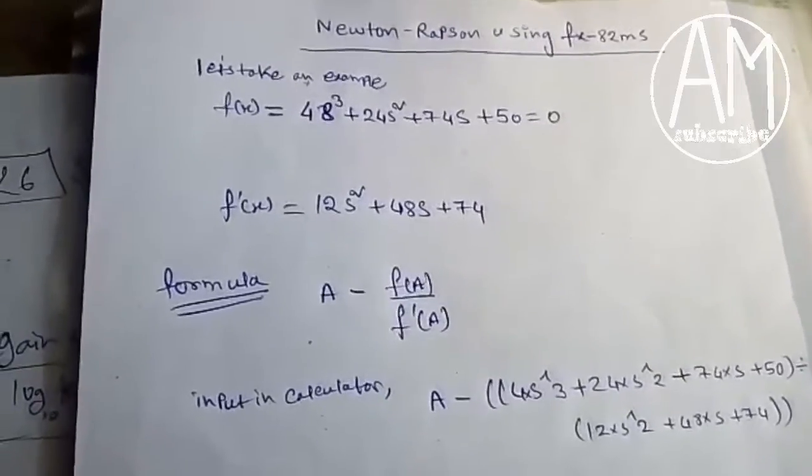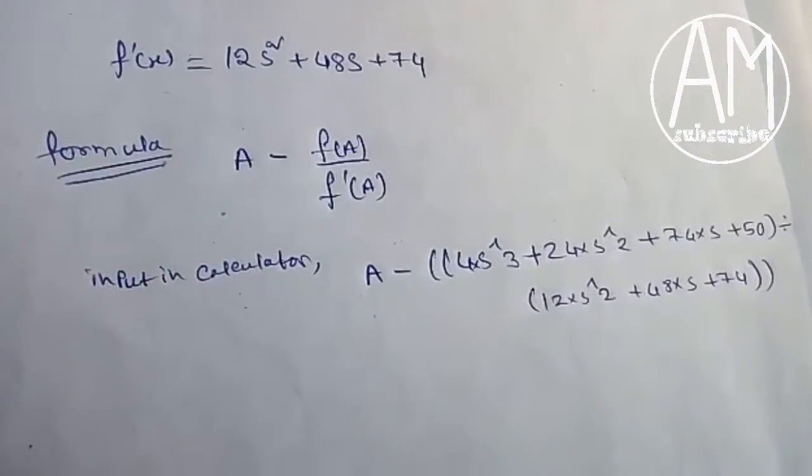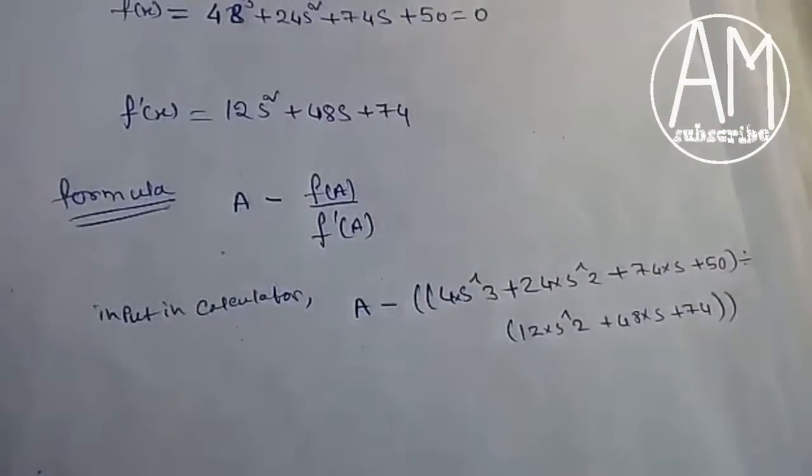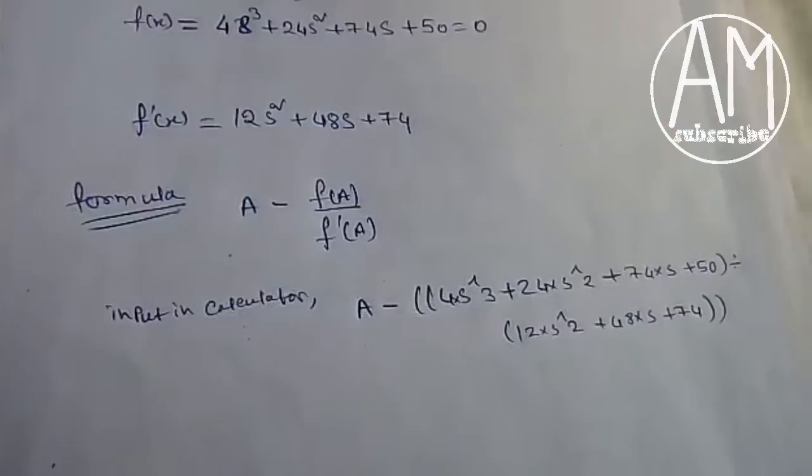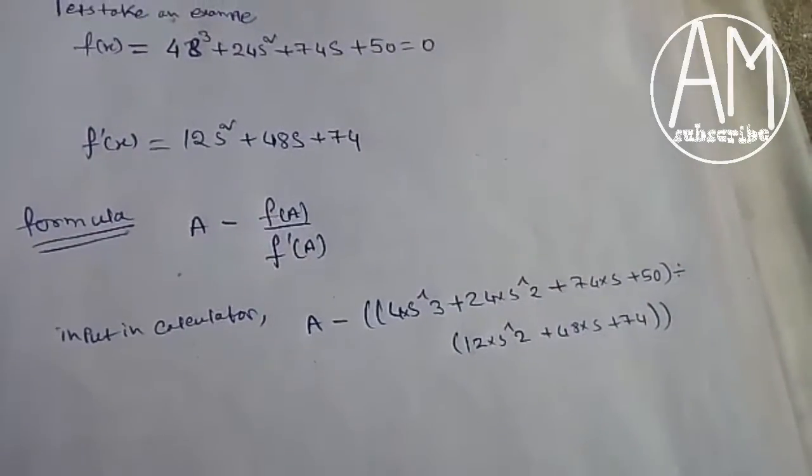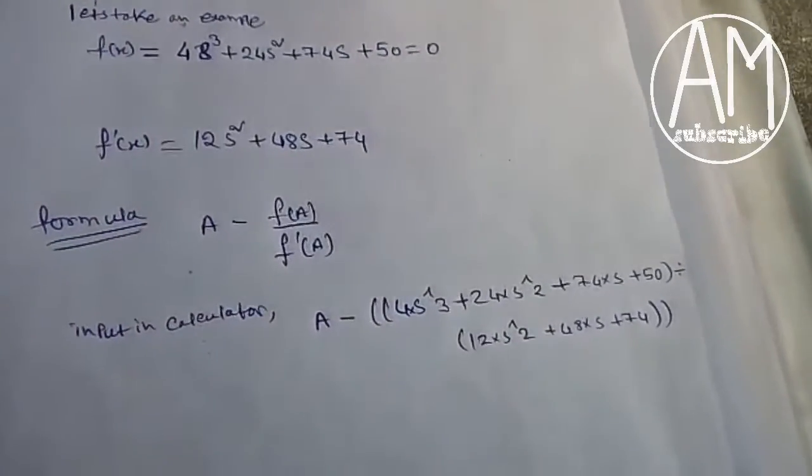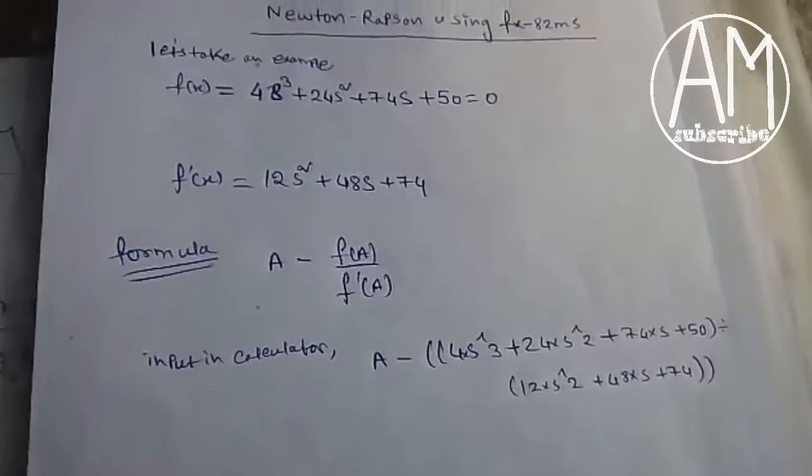In the calculator we have to input this formula: A minus double bracket, 4 into A to the power 3 plus 24 into A to the power 2 plus 74 into A plus 50, divided by 12 into A to the power 2 plus 48A plus 74, double bracket close.